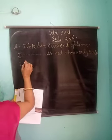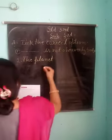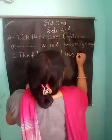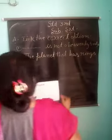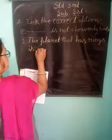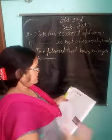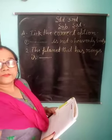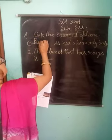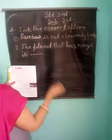Four options are given: First — Moon, Second — Rainbow, Third — Sun, Fourth — Jupiter. Rainbow is not a heavenly body. Second question: the planet that has rings is Saturn.